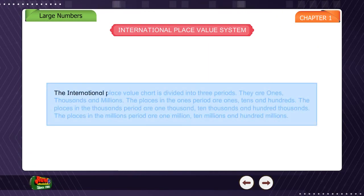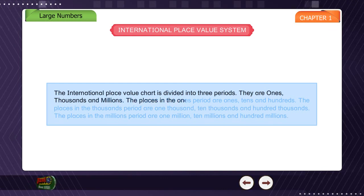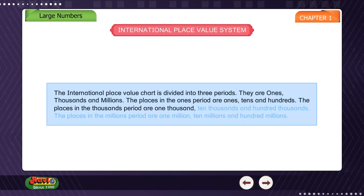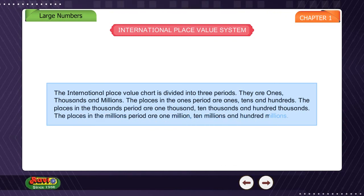The international place value chart is divided into three periods: Ones, Thousands, and Millions. The places in the Ones period are Ones, Tens, and Hundreds. The places in the Thousands period are One Thousand, Ten Thousands, and Hundred Thousands. The places in the Millions period are One Million, Ten Millions, and Hundred Millions.